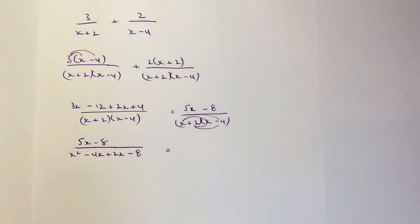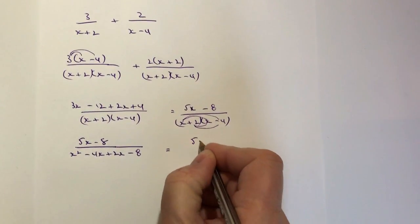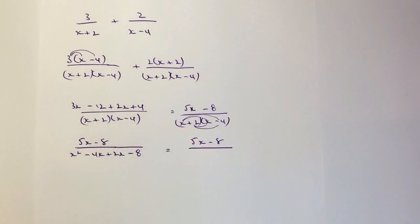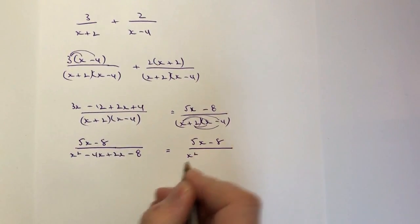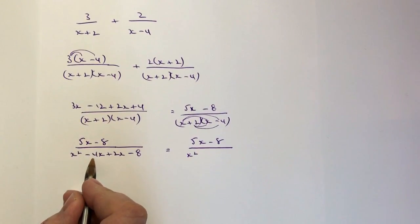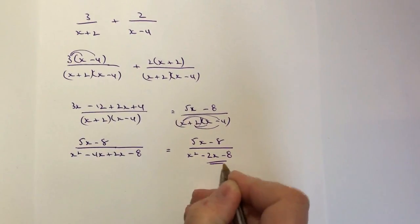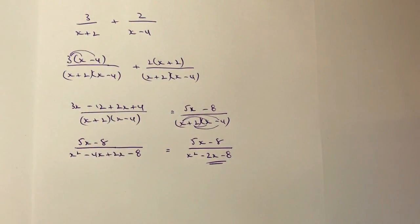So I'm just going to tidy this up and this will be my final answer: 5x-8 on the top, and on the bottom I'm going to have x², I've got -4x plus 2x is -2x, and then -8 at the end. And that will be my final answer to this particular question.